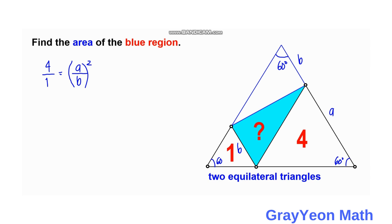If we take the square root of both sides, we have 2 to 1 is equal to b over a, or a is equal to 2b.